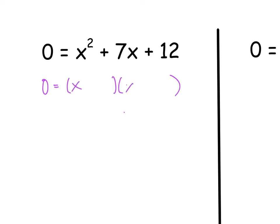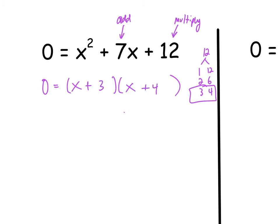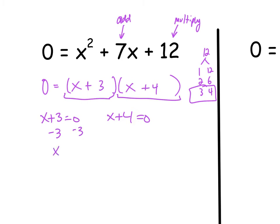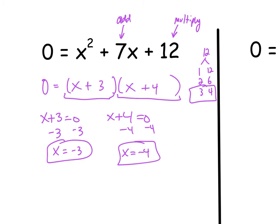To get x squared, I know I have to have x times x, and then I'm looking for things that multiply to 12 and add to 7. The factors of 12 are 1 and 12, 2 and 6, and 3 and 4 — and 3 and 4 is the combo that adds to 7. So: x plus 3, x plus 4. Once we have it factored, we know these two things multiplied together equal zero. So, x plus 3 equals zero and x plus 4 equals zero. Subtract 3: x equals negative 3. Subtract 4: x equals negative 4. Those are the two answers.